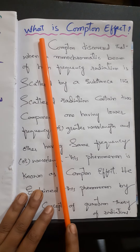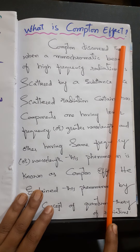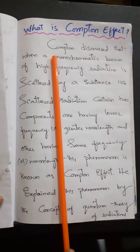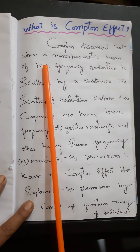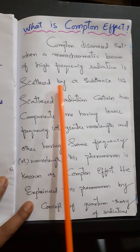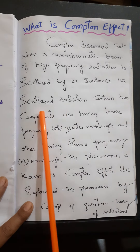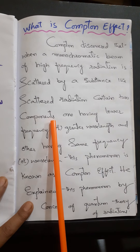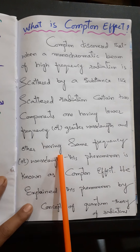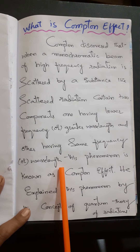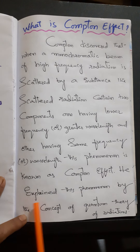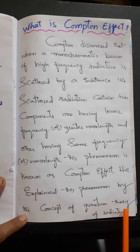Good morning. Today I am going to explain what is the Compton effect. Compton discovered that when a monochromatic beam of high frequency radiation is scattered by a substance, the scattered radiations contain two components: one having lower frequency or greater wavelength, and the other having the same frequency or wavelength. This phenomenon is known as the Compton effect.